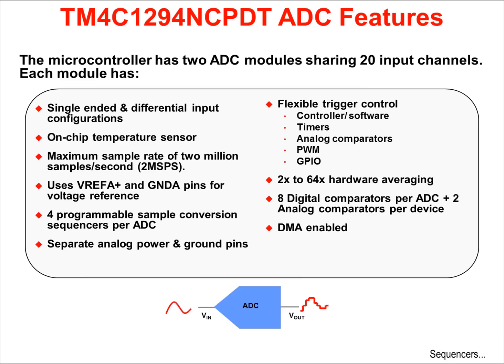The microcontroller has two ADC converter modules sharing 20 input channels. Each module can make single-ended or differential input measurements, has an on-chip temperature sensor, has a maximum sample rate of 1 million samples per second, and uses the external voltage reference and ground pins for its voltage reference. There are four programmable sample conversion sequencers per ADC, and the part has separate analog power and ground pins.